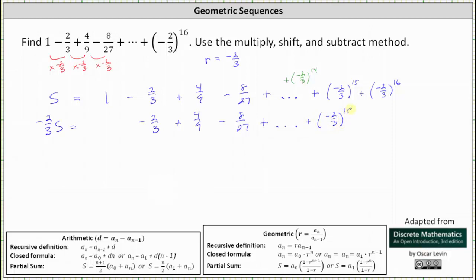The next product is negative 2/3 times the 15th power of negative 2/3, which gives us plus the 16th power of negative 2/3. And then the last product is negative 2/3 times the 16th power of negative 2/3, which gives us the 17th power of negative 2/3.